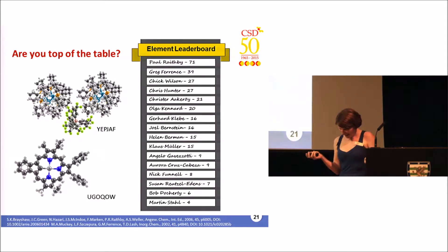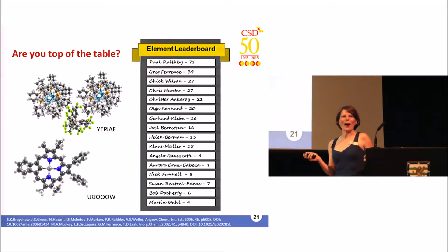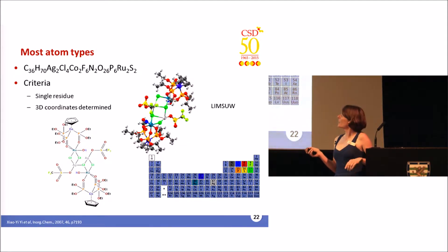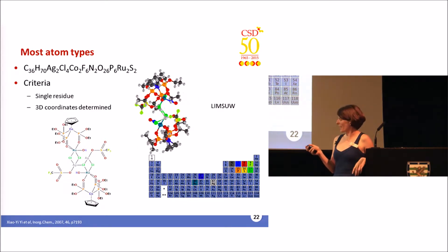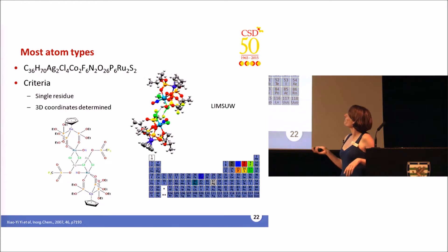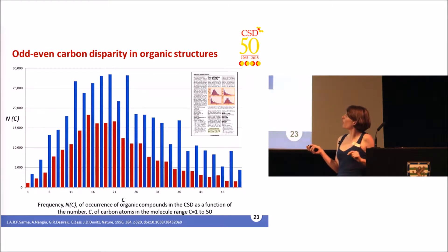With so many structures and so much data, we can find interesting facts about crystal structures and crystallographers. Here you can see a leaderboard of our speakers and how they rank on different element types in the CSD. We can also find out which structures have the most different atom types — currently four structures have 11 different atom types. The CSD still throws up some puzzles: back in 1996, Jack Dunitz and others observed that molecules with an even number of carbons clearly outnumber those with an odd number, and I think that's still a puzzle today.